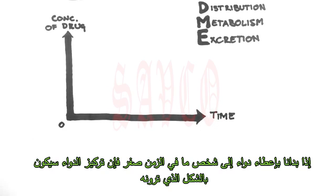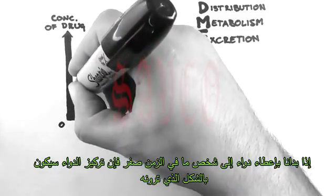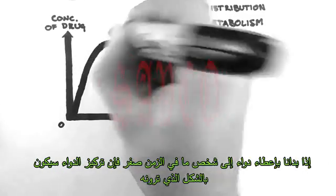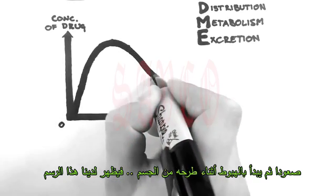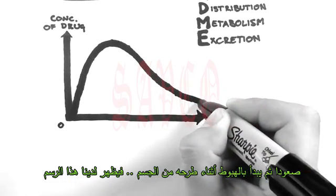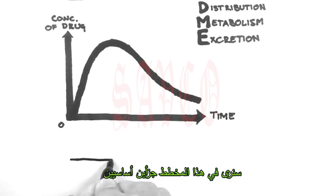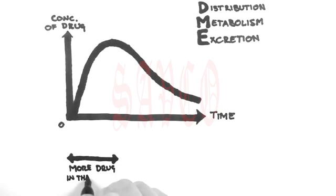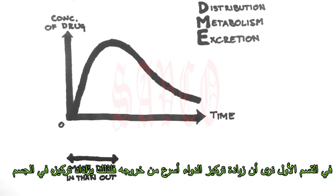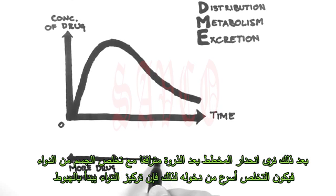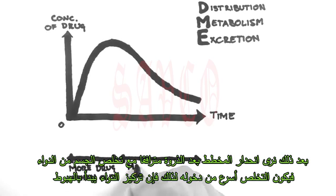So if we give a person a drug at time zero, then we will see the concentration of the drug go up, and then it will fall slowly as the drug is removed from the body. And that's what we see on this graph. In this section, the drug enters the body faster than it is being removed from it, so the concentration of the drug in the body increases. Then, after the peak of this graph, the drug is being removed from the body faster than it is entering, so the concentration of the drug in the body starts decreasing.